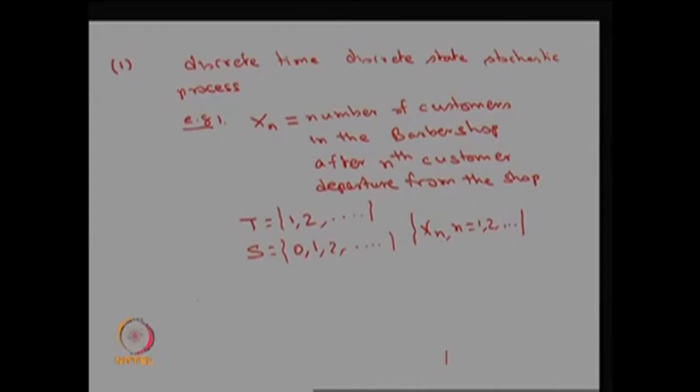This random variable can be created with the help of case 1: for a fixed n, find the random variable, then make a collection of random variables. So we can create this stochastic process using approach 1, which is the easier one.